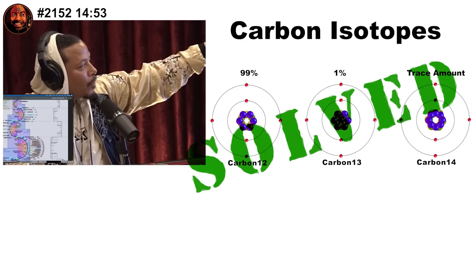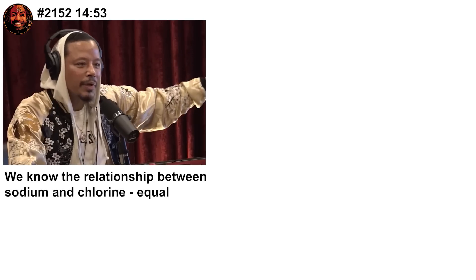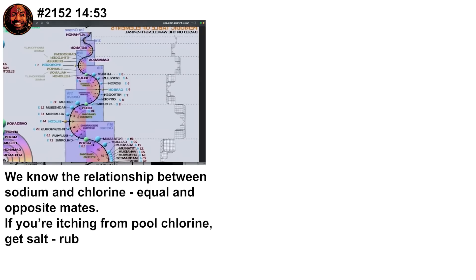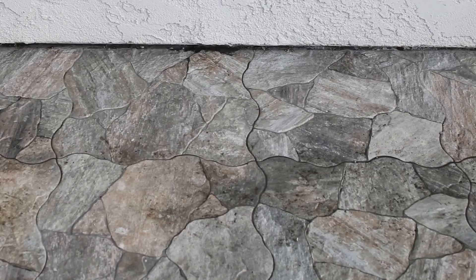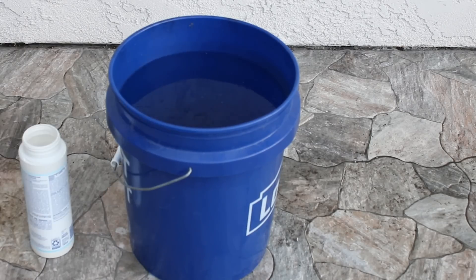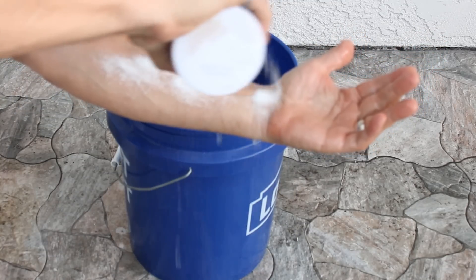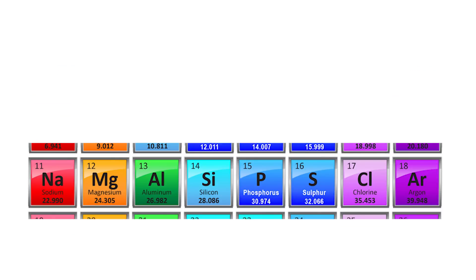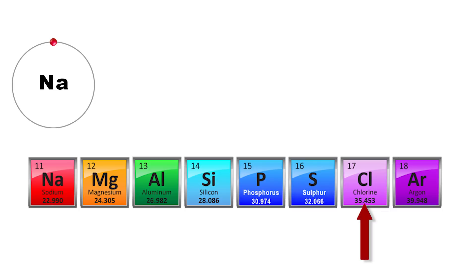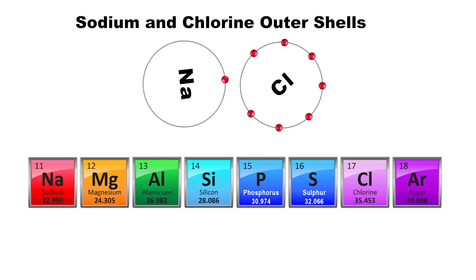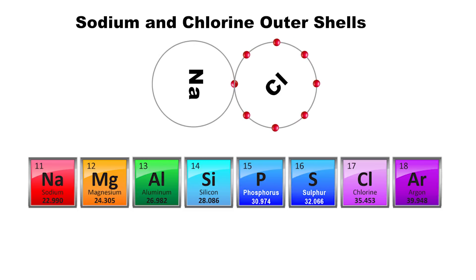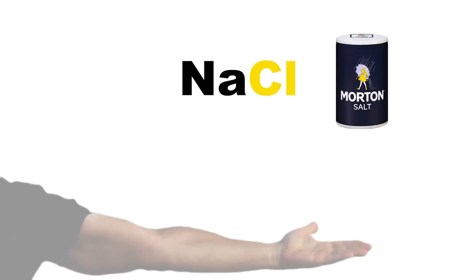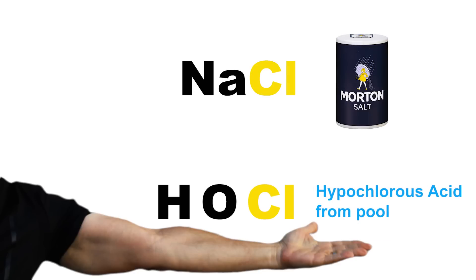Let's see what else Terence has to say about the periodic table. He says we know the relationship between sodium and chlorine — they're equal and opposite mates. If you get out of the pool itching from the chlorine, all you have to do is get some real salt and rub that on your skin and it'll turn right into an oil. Okay, let's try it. I don't have a pool, so I'll need to improvise. Chlorine tablet. This is kind of itchy — Terence is right there. Don't feel any oil.